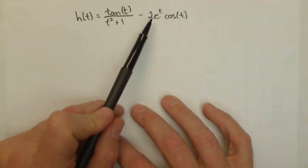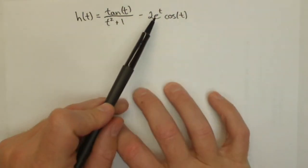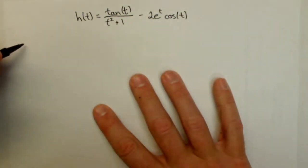So this first part is going to require a quotient rule. The second part is going to require a product rule. And we'll just do those each separately and then combine them at the end.